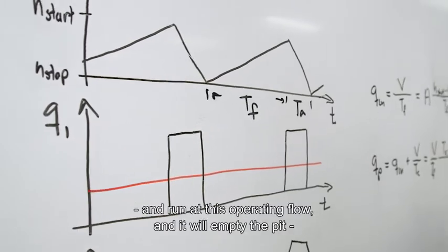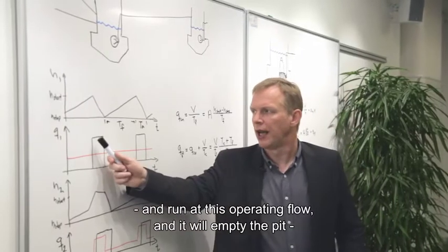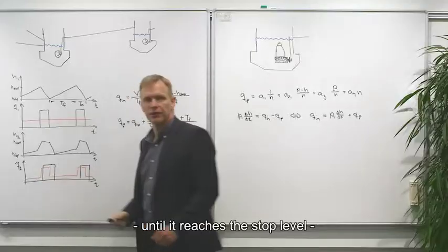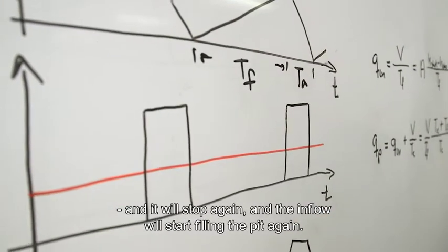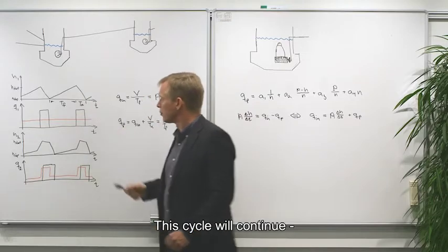When it reaches the start level, the pump will start and run at this operation flow, and it will empty the pit until it reaches the stop level, and it will stop again and the inflow will start filling the pit again. This is a cycle that will continue.